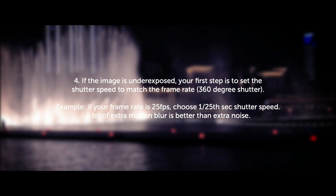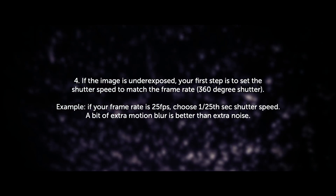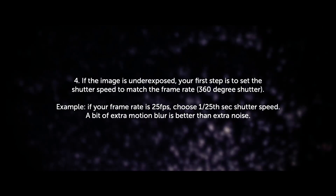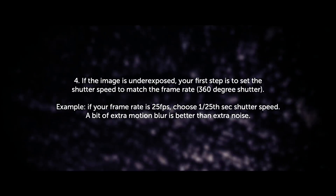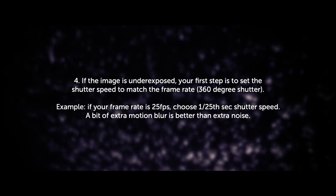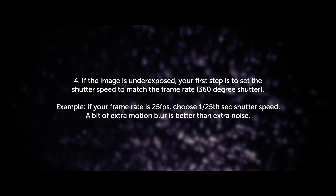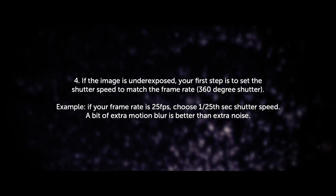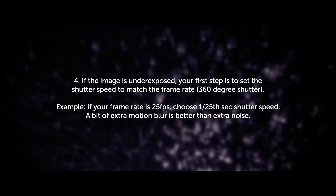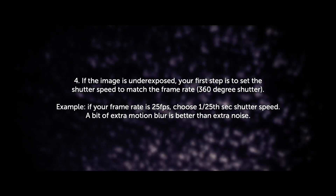If the image is underexposed, your first step is to set the shutter speed to match the frame rate. This is the equivalent of a 360-degree shutter. For example, if your frame rate is 25 frames per second, choose 1/25th of a second shutter speed. A bit of extra motion blur is better than the extra noise.